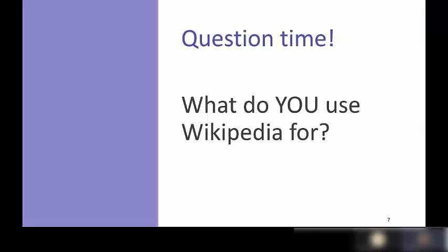A participant shares how they use Wikipedia: primarily for a brief overview to familiarize themselves with a topic. For example, when a patient comes into the ER with an unfamiliar condition like Proteus Syndrome, they'll quickly look it up on Wikipedia to get a quick overview and familiarization — but would never use it for actual research.